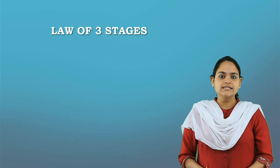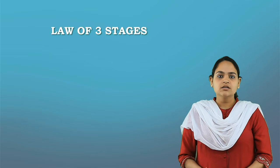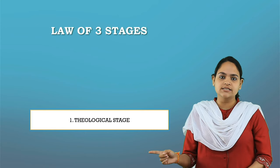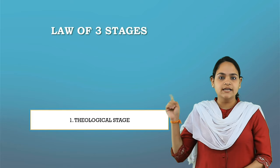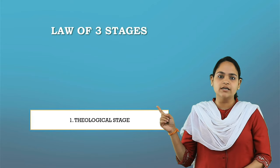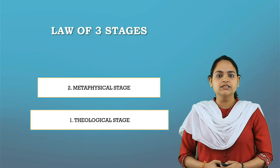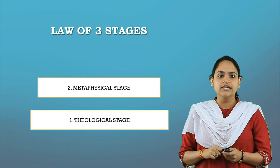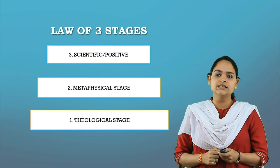Let us now look at the Law of Three Stages, an important work of Comte. Comte viewed society as passing through three distinct stages. The first is the Theological Stage, also known as the Fictitious Stage, where people understood occurrences in society in terms of their religious beliefs. The Renaissance marks the second stage, called the Metaphysical or Abstract Stage, where people started seeing social life as an expression of human nature. Later, the discoveries of Newton and Galileo gave rise to the third stage, also known as the scientific stage, in which science replaced religion and philosophy.